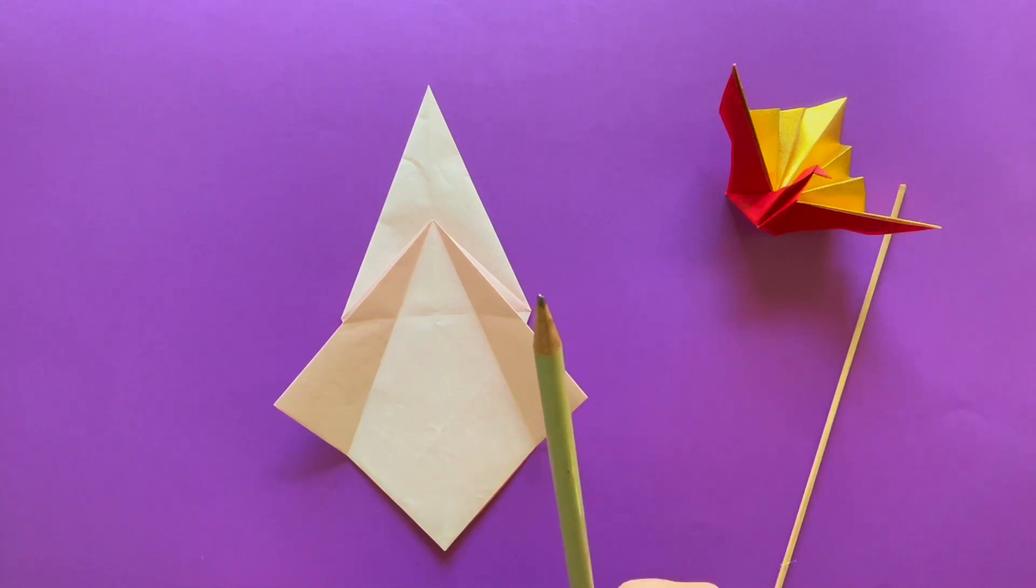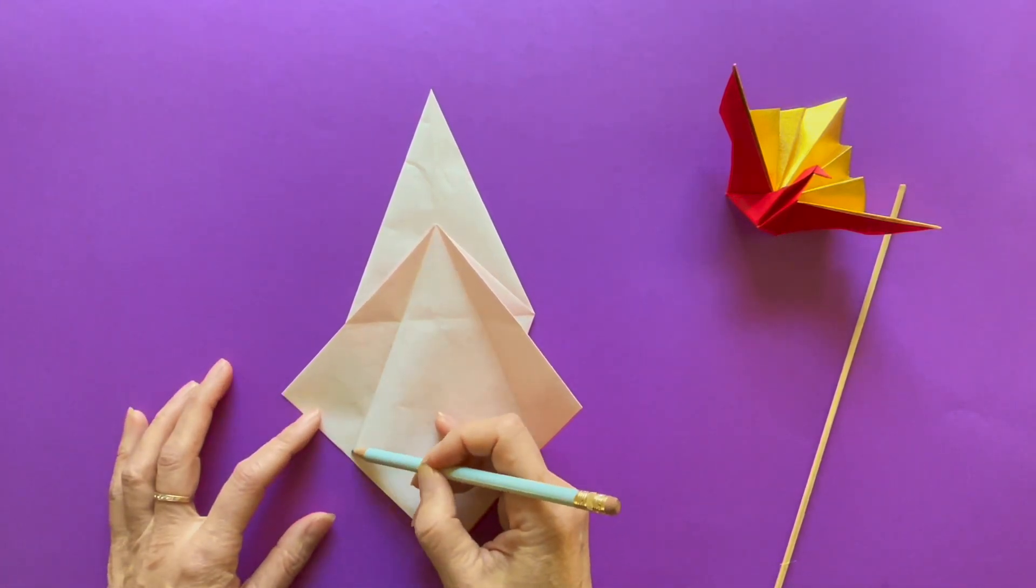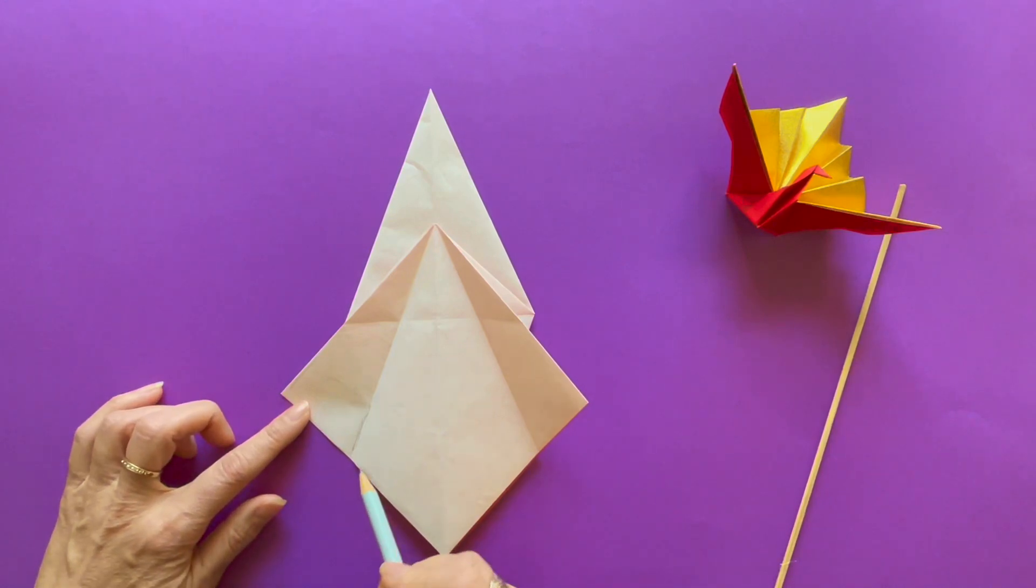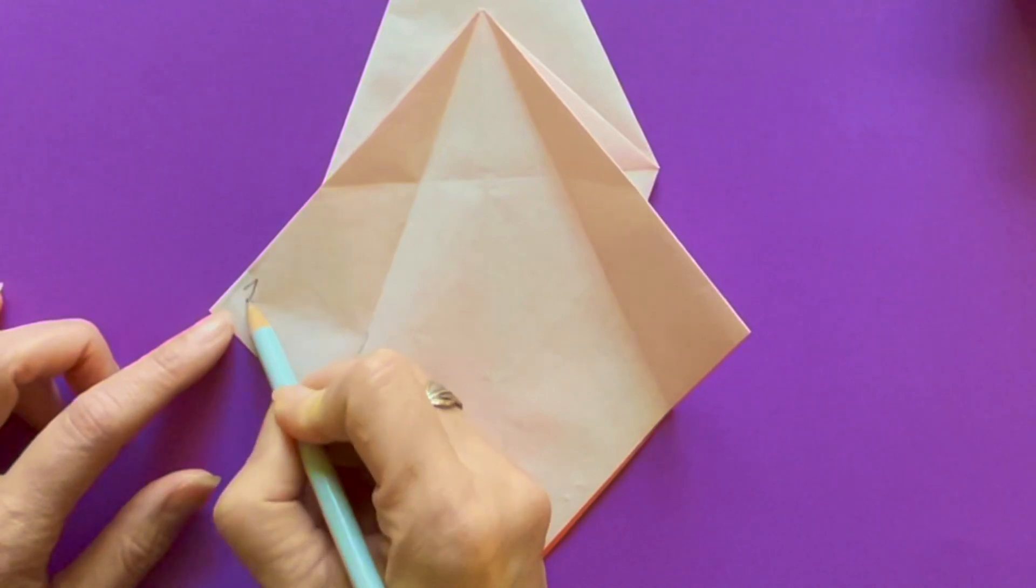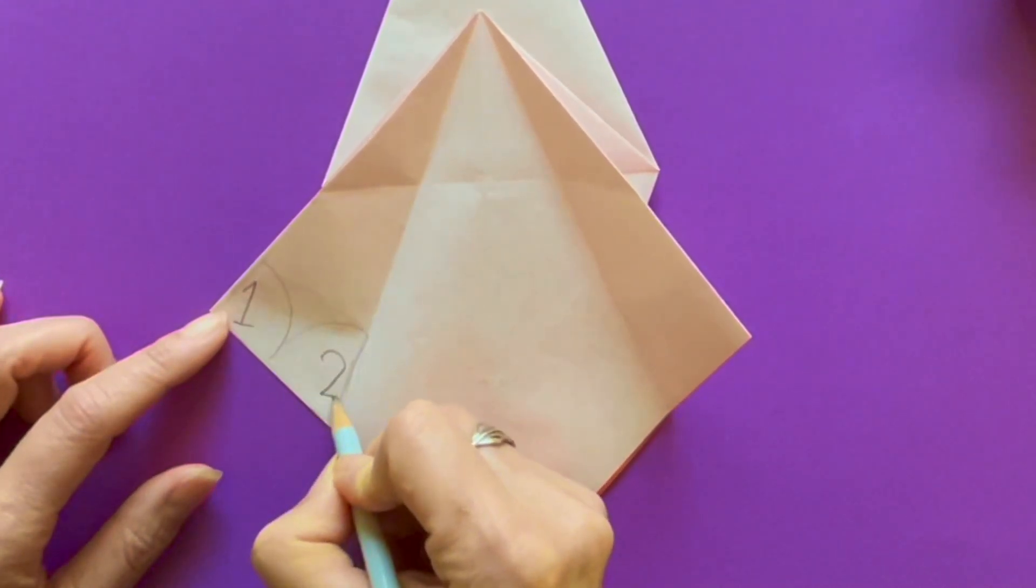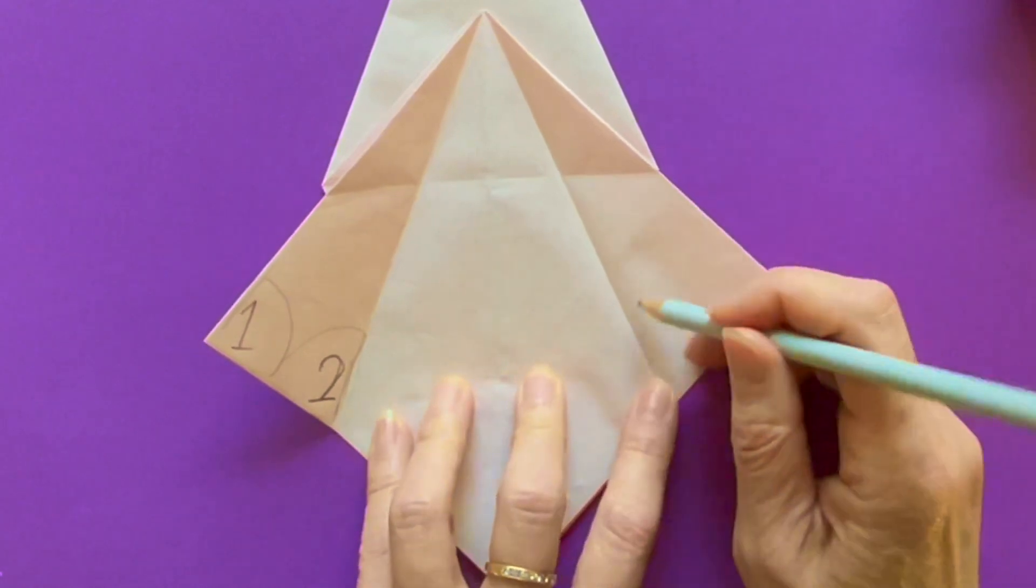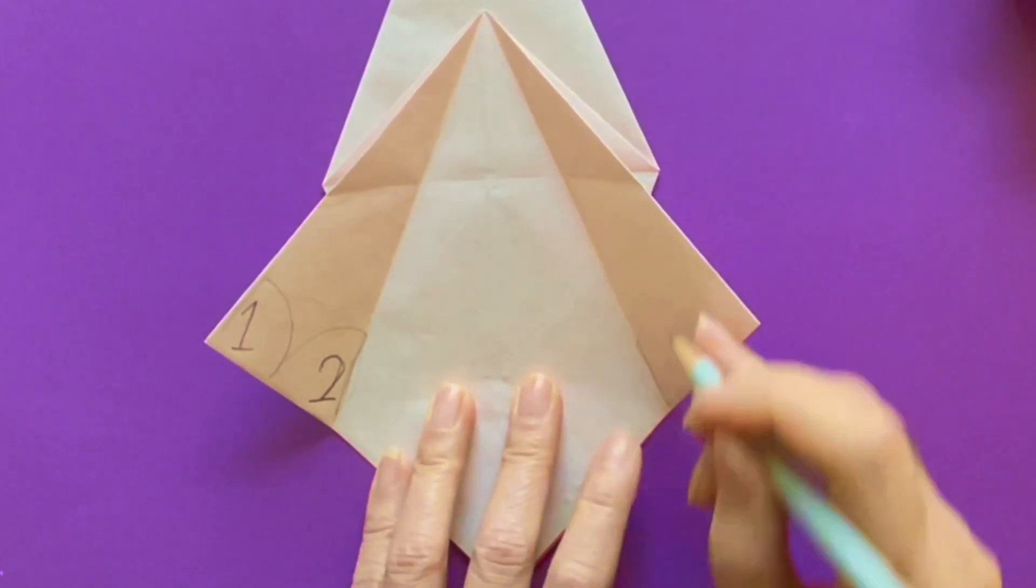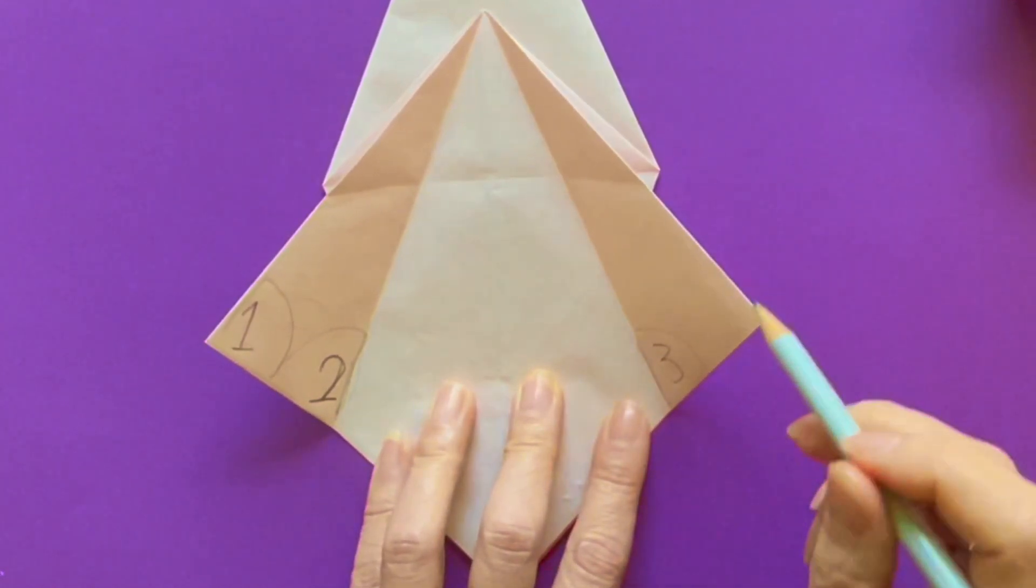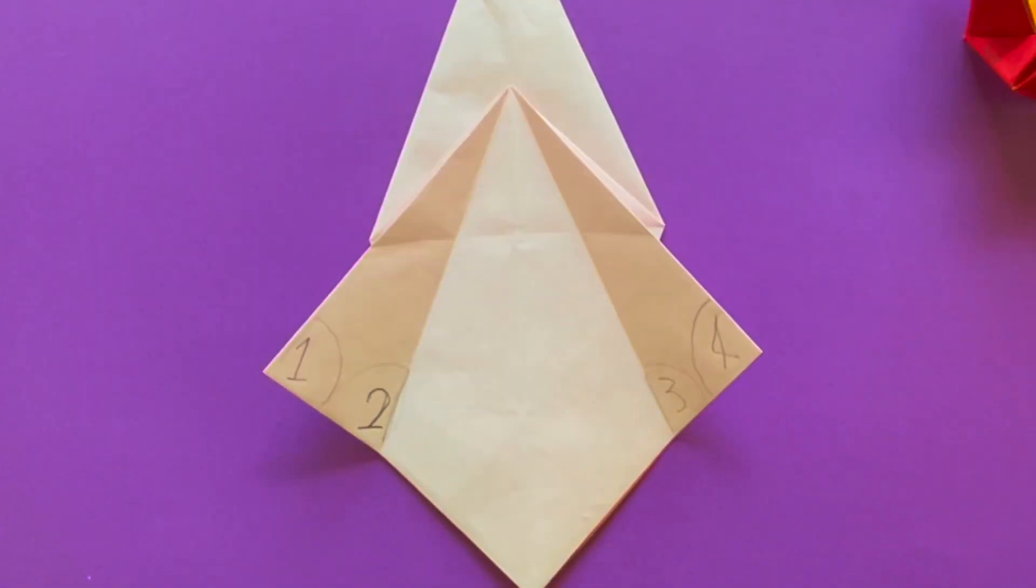Grab a pencil. We are going to mark. I highly recommend to mark it like I do if you are a beginner. If you are an experienced folder, maybe you don't need this. Let's see. What you can do is mark one on the left corner of this diamond square and mark two in the same triangle. And do the same on the opposite side. Be aware of the diagonal crease you just created. And right next to it, number three goes on and number four goes on to the right corner of this diamond square.